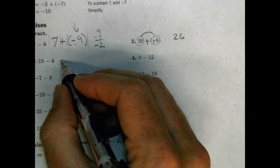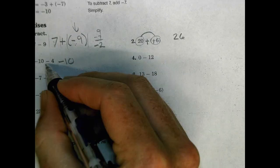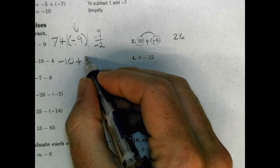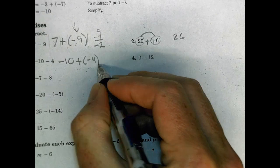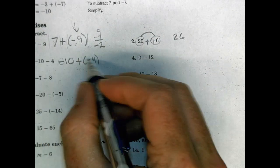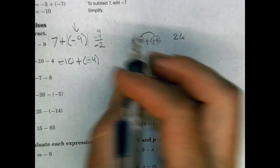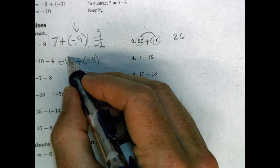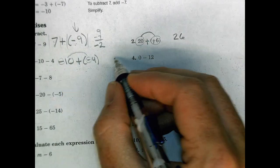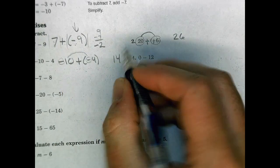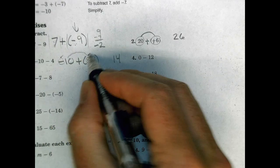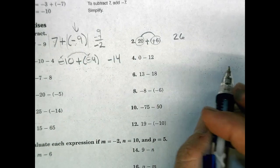Number three: negative 10, and instead of subtracting 4, we add the opposite — adding negative 4. Now both integers are negative, so the signs are the same. Find the sum: 10 plus 4 is 14, and keep the sign the same. Negative plus negative stays negative 14.